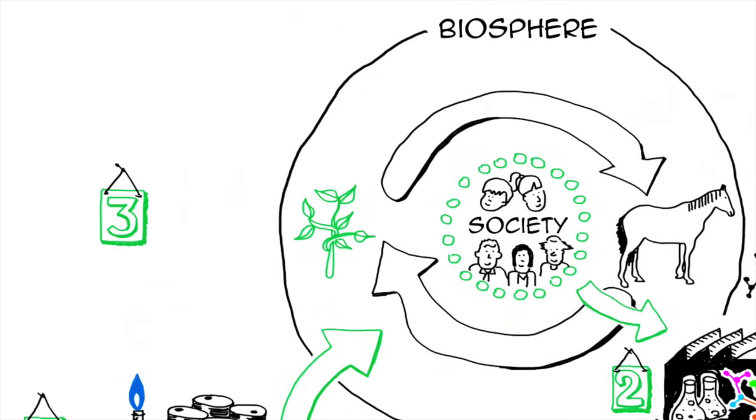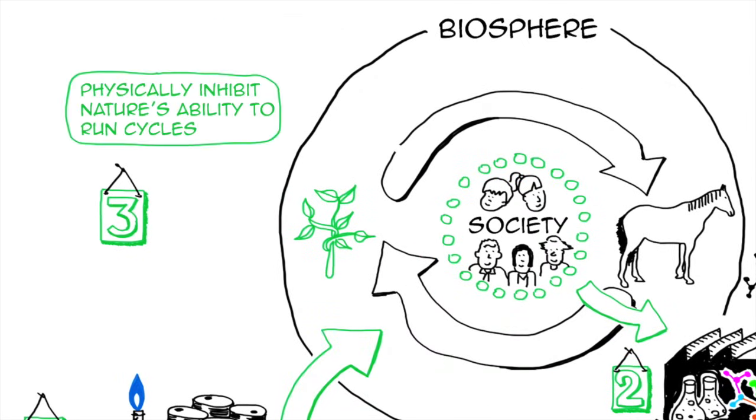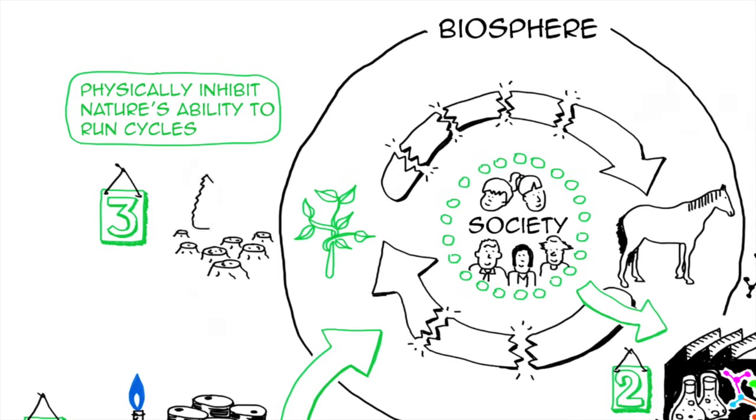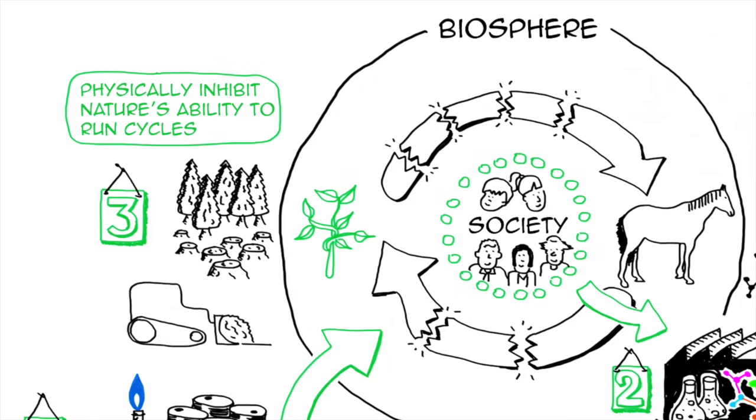The third one is that we physically inhibit nature's ability to run the natural cycles. How do we do that? Well, for example, by chopping trees at a faster rate than they can grow, by systematically destroying ecosystems and replacing them with parking lots, roads, buildings, etc., so that nature cannot run its cycles anymore.